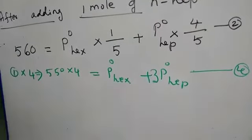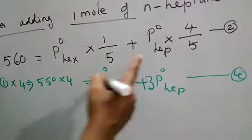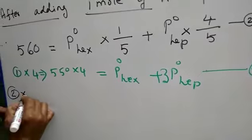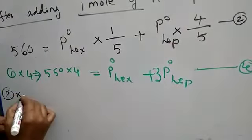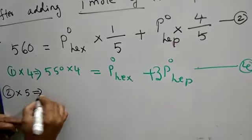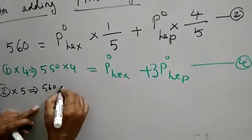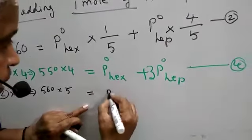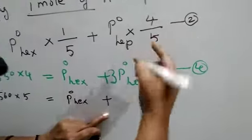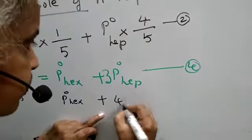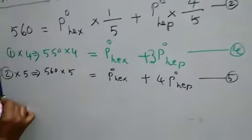Next equation: I will go with this. 560 times this equation. Equation number 2 divided by - you can see denominator both are having 5. So whole equation multiplied by 5. So now you are getting: 560 times 5 equals P naught hex, the 5s are getting cancelled. Plus here 5s are getting cancelled, and 4 P naught heptane. This is equation 5.